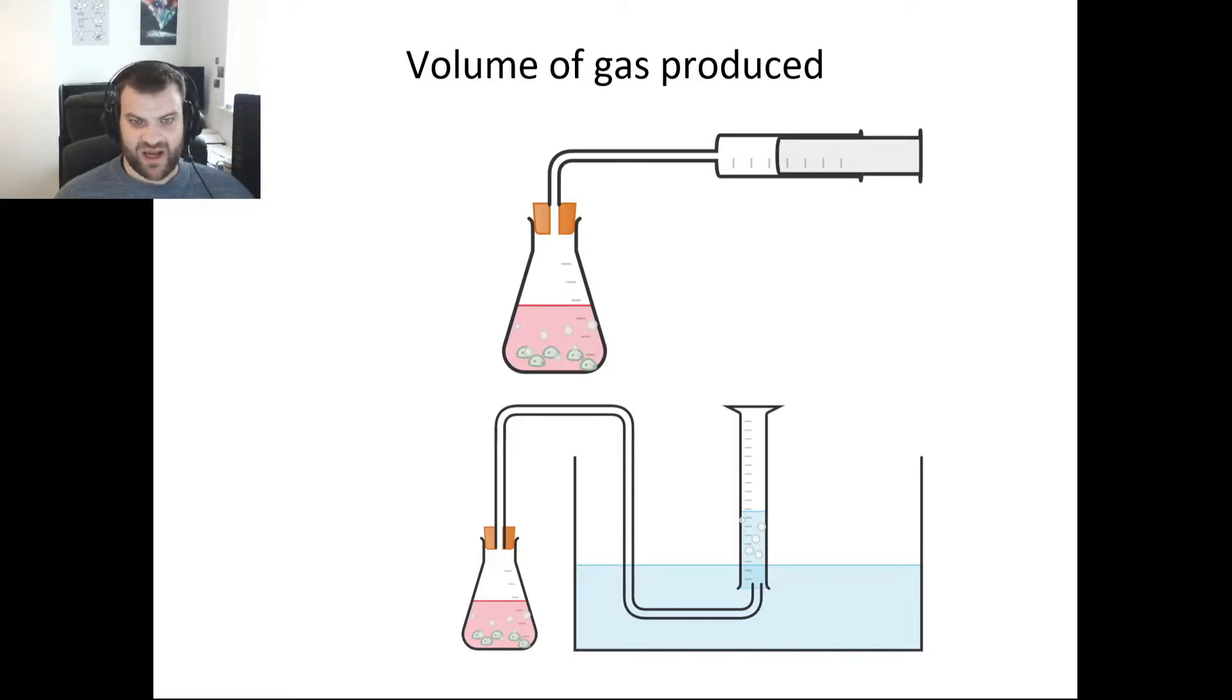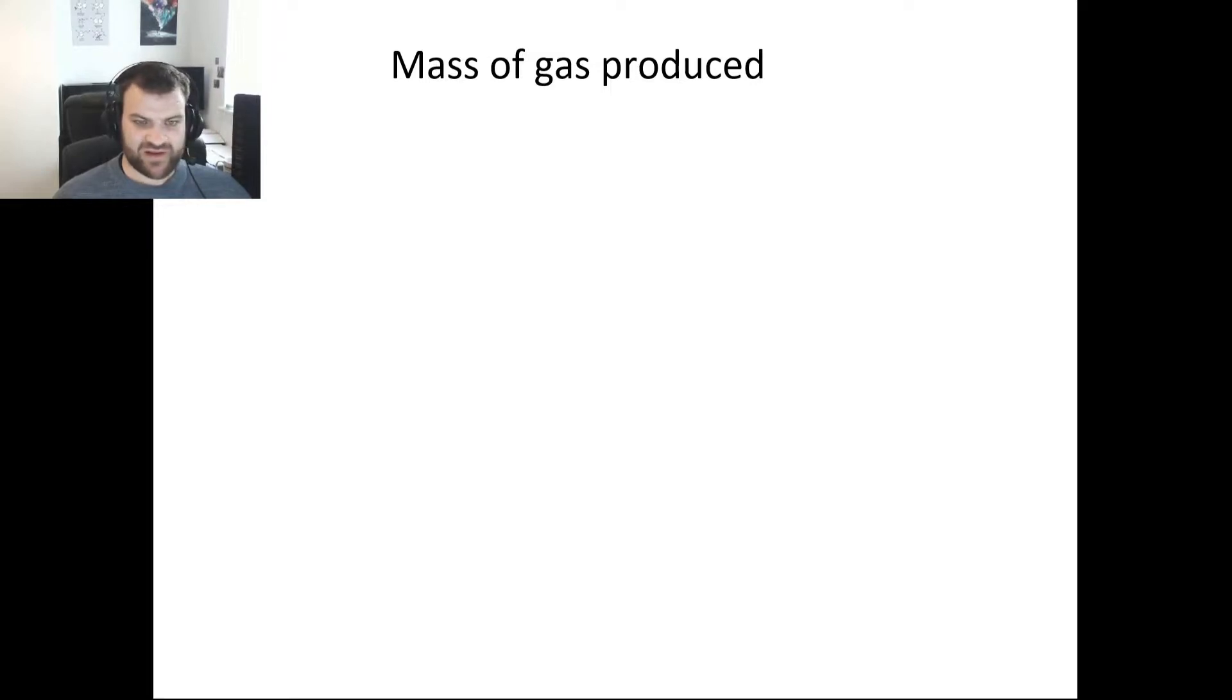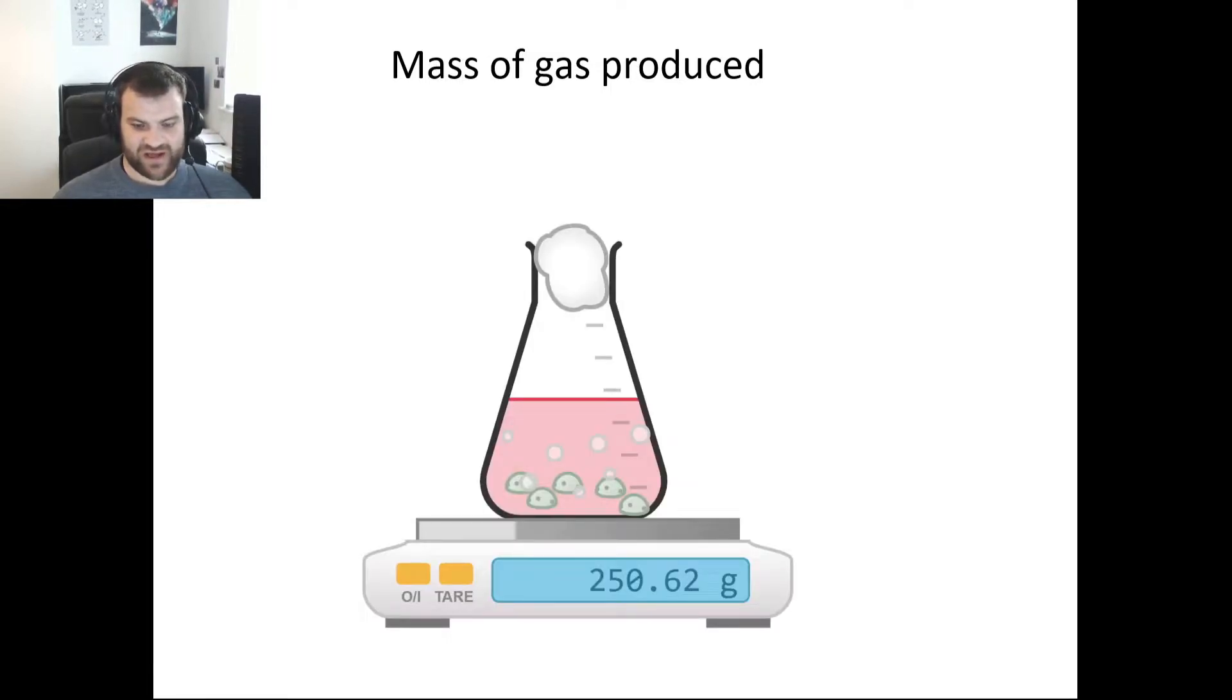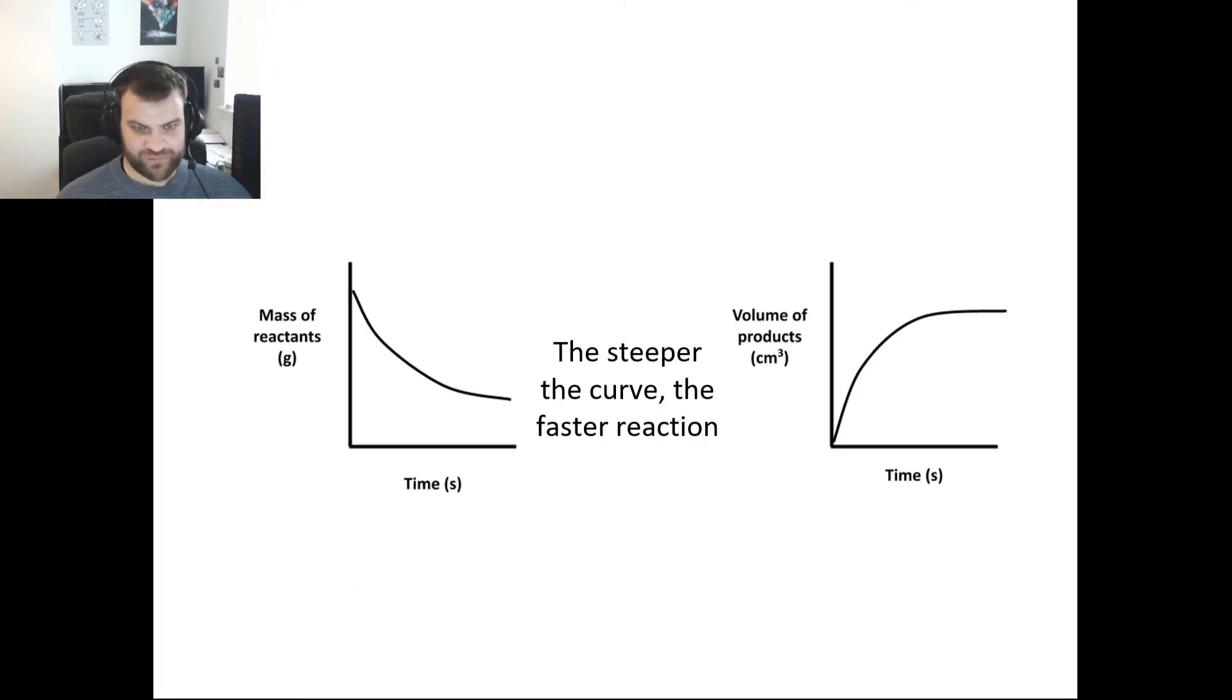We could also do a similar thing but looking at the mass of a gas produced. We have our apparatus on a balance and we measure the mass over time and see how it changes. From these we will then be able to draw graphs. When we're looking at our graphs for these reactions, the steeper the curve, the faster the reaction.